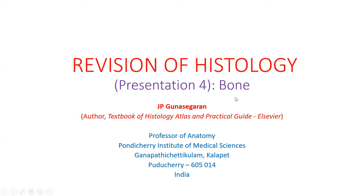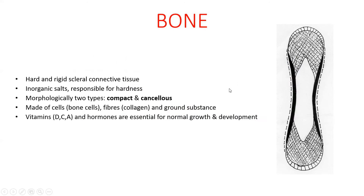This presentation deals with the structure of bone. Bone is a hard and rigid connective tissue. The hardness is due to deposition of inorganic salts, mainly calcium phosphate. Morphologically, there are two types of bones, namely compact and cancellous bone.